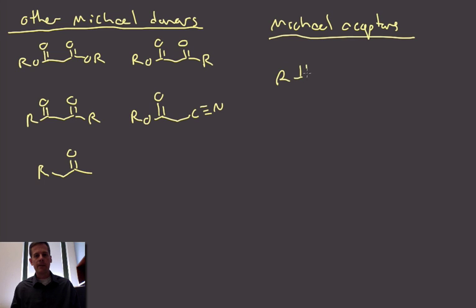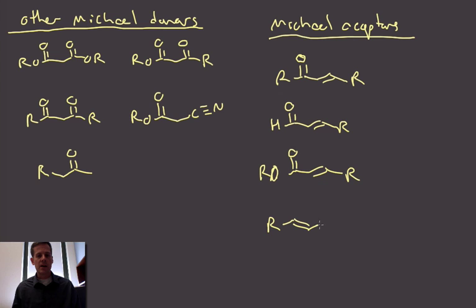Then there are other Michael acceptors. This encompasses an enormously wide range of materials. We could have alpha-beta unsaturated ketones, alpha-beta unsaturated aldehydes, alpha-beta unsaturated esters, and other things too, like alpha-beta unsaturated nitriles - anything with an electron-withdrawing group that's attached to an alkene.